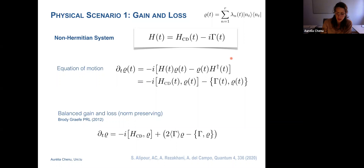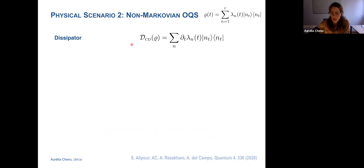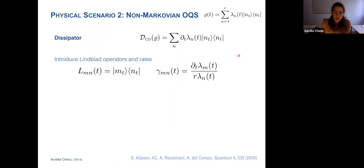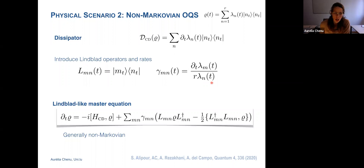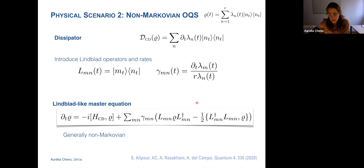A second physical setup to implement this general trajectory is the Lindblad platform. We introduce Lindblad operators given by the instantaneous eigenbasis and some rates, allowing us to recast the trajectory master equation in Lindblad form. The Lindblad operators are obtained from the instantaneous diagonalization of the trajectory, so it's not immediately obvious how to do this experimentally. Also, these gamma rates are time dependent, and in general the dynamics is non-Markovian.